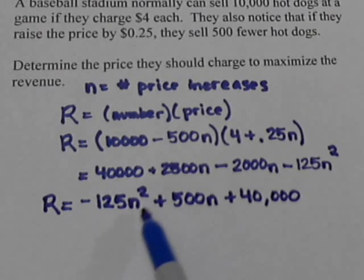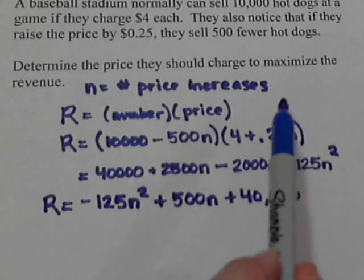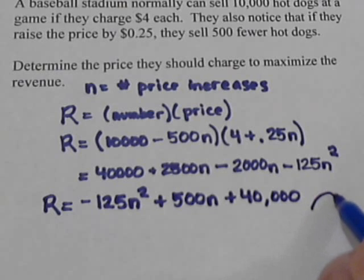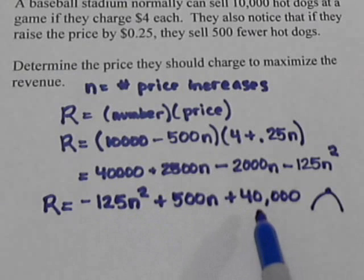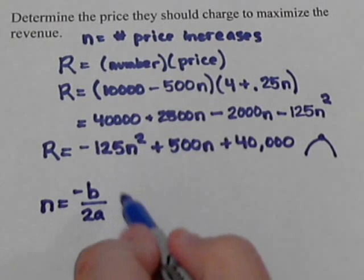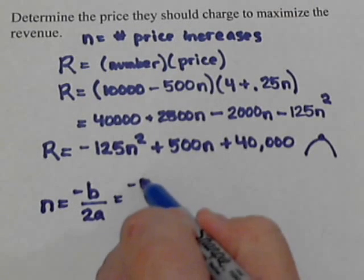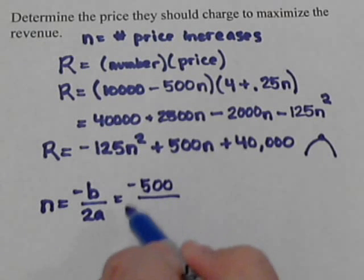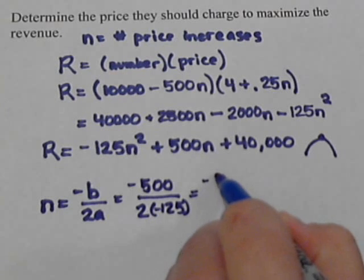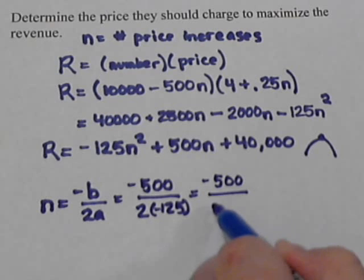So we've got our revenue formula, and we see it is a quadratic because we've got the N squared term, and we're asked to maximize the revenue. We've got a negative A term, so this is going to have a hill shape and we're looking for the highest point — we need to find the vertex. To find the N value of the vertex, we use the formula negative B over 2A. Our B is 500 and our A is negative 125, so we get negative 500 over negative 250.